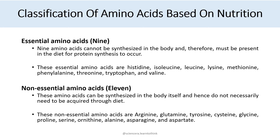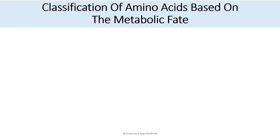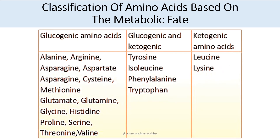This is the classification based on nutrition. Classification of amino acids based on metabolic fate can be divided into three groups: glucogenic amino acids, glucogenic and ketogenic amino acids, and ketogenic amino acids.